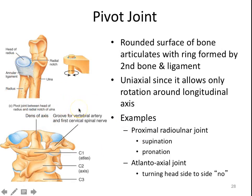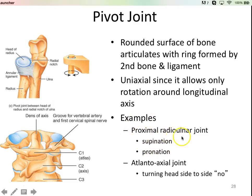Rotation is different than circumduction — rotation is that smaller rotational turning movement. The radius and ulna are the classic example. You can see how that round head of the radius allows it to rotate around the radial notch in the ulna. In the proximal radio-ulnar joint — the one closest to your elbow — it allows for supination and pronation. If this joint fuses, sometimes when people break their elbows, depending on where the break is, it can cause fusion in this area and they lose some or all of their range of motion for supination and pronation.